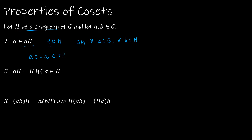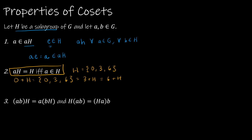Property 2: AH equals H if and only if A is an element of H. Looking at our Z9 example where H was {0, 3, 6}: 0 plus H, 3 plus H, and 6 plus H all give the same set, because 0, 3, and 6 are all elements of the subgroup H.